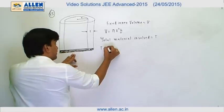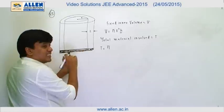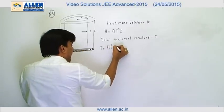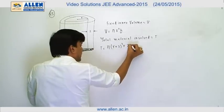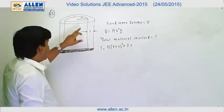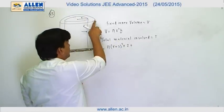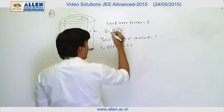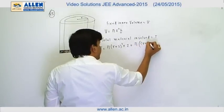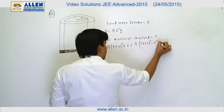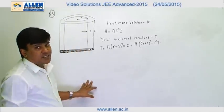So this is going to be π (r + 2)² and the thickness is 2, plus the volume π (r + 2)² minus r² multiplied by h, that is the height of the cylinder.